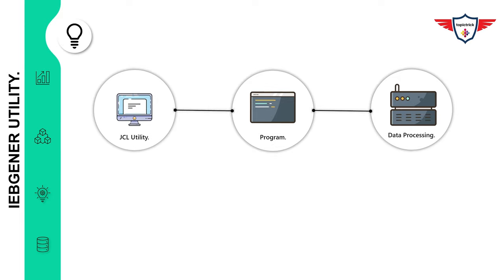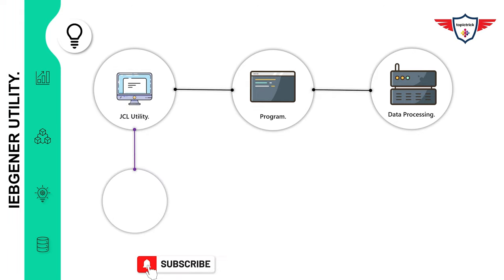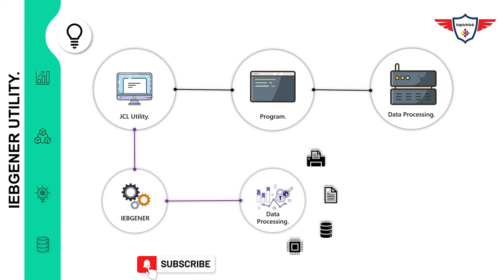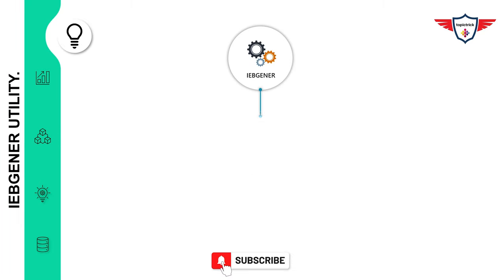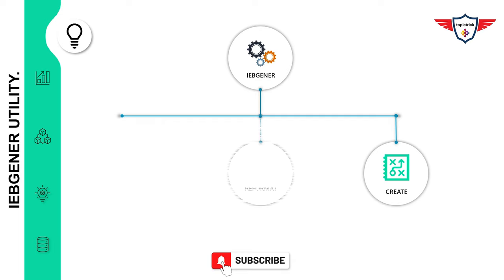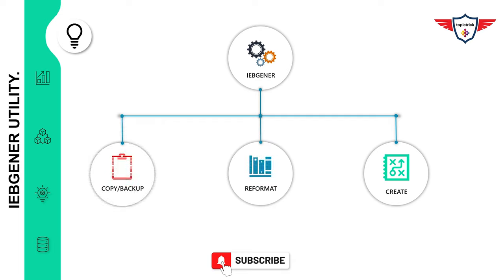The IBGener utility is a copy program that has been part of the operating system since the first release of OS 360. One of its many uses is to copy a sequential dataset, a member of a partitioned dataset or PDSE, or ZOS unique system services files such as HFS files. As a result, this utility can be used to backup or restore sequential datasets. You can also use it to print a non-VSAM sequential dataset by copying it to a SYSOUT dataset. The common uses of IBGener utility are to create, reformat, and backup non-VSAM sequential datasets.